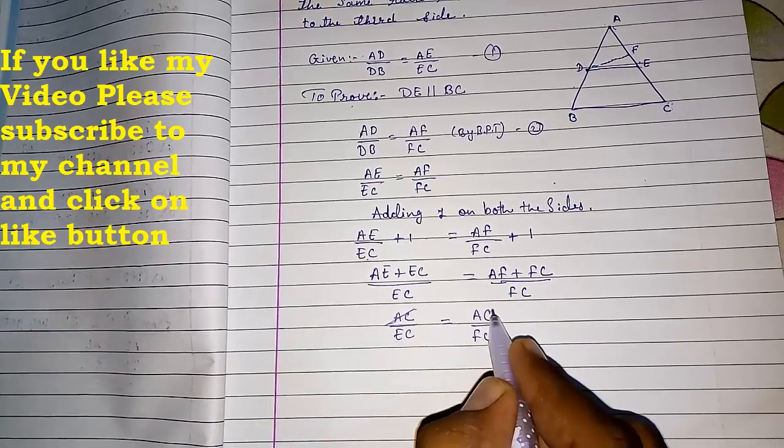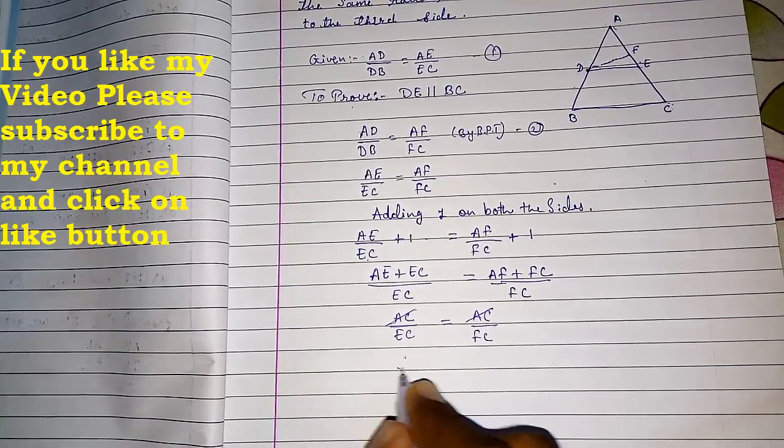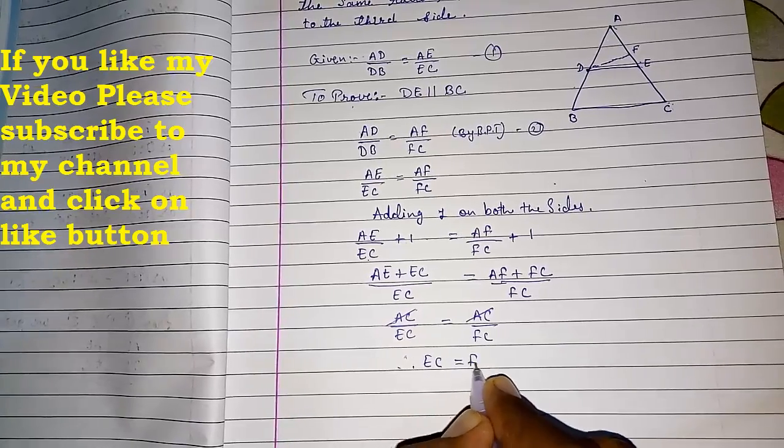So AC, AC cancelled. Therefore we get EC equals FC.